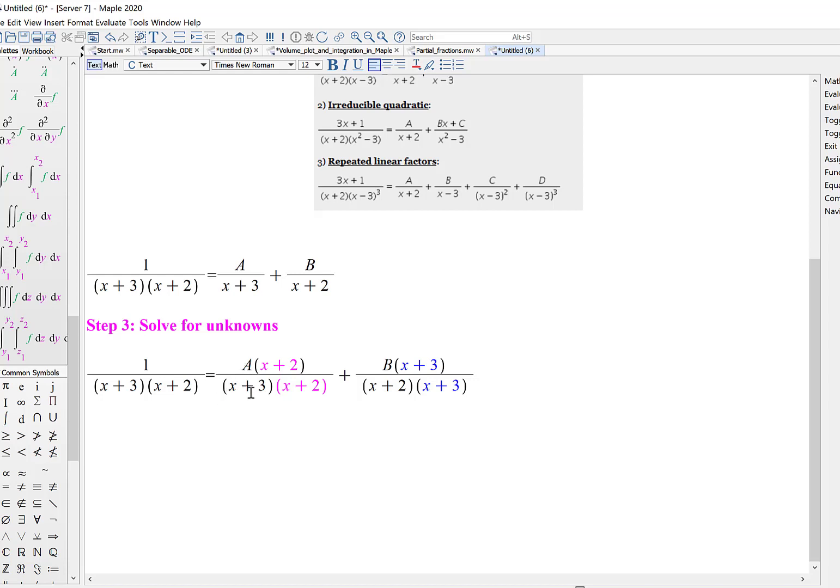If I have A over x plus 3 plus B over x plus 2, and I want to add those fractions together, I need to find a common denominator. So I've multiplied my first fraction times x plus 2 over x plus 2, and done the same thing with the second fraction so that now we have common denominators. If I multiply everybody through by this denominator, I'll be just left with the equation 1 equals A times x plus 2 plus B times x plus 3.